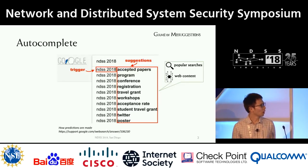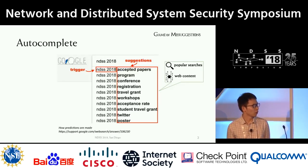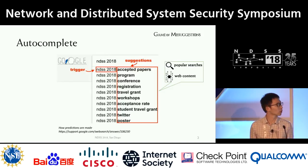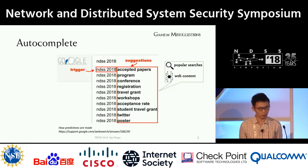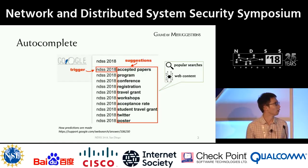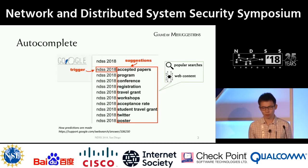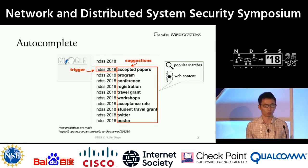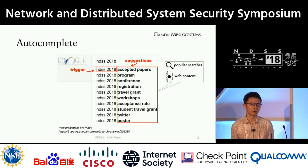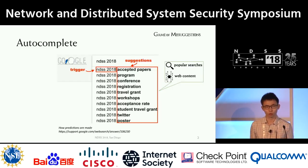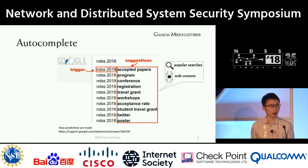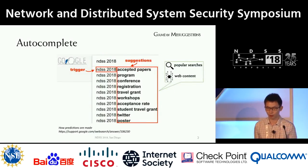So why are we wondering how these autocomplete suggestions come from? Based on Google and other service providers, there are mostly two sources: one is the popular searches made by different people, and the other is the content on the web. So naturally, it's very convenient for the user to search with these autocompletes, and users always trust them as popular ones since they are recommended by Google.